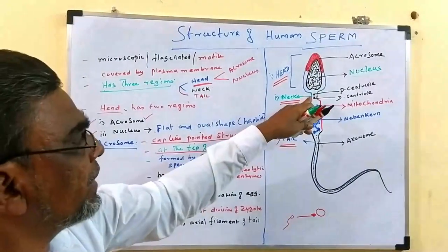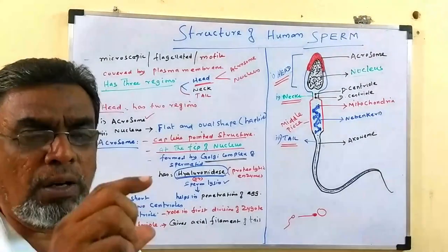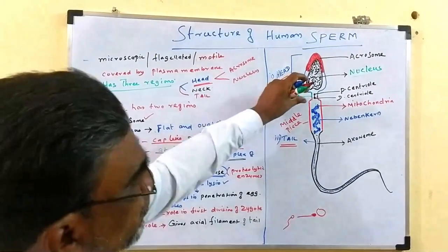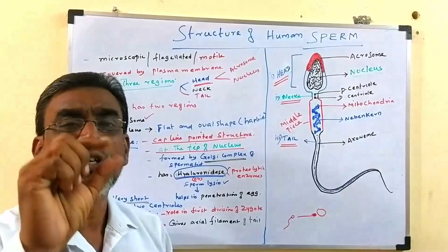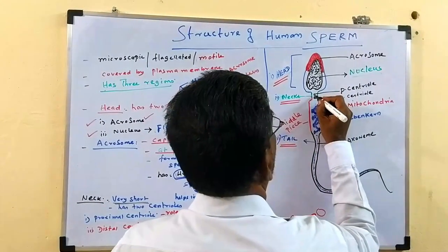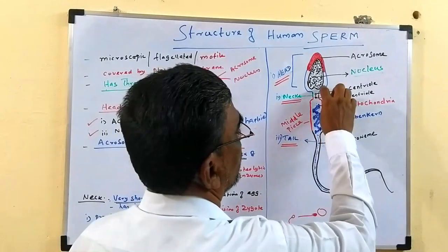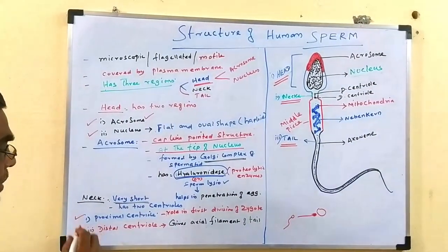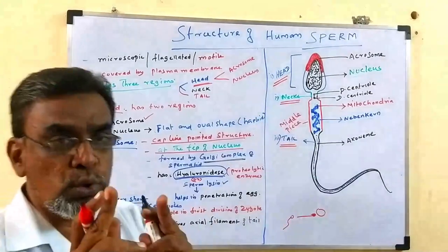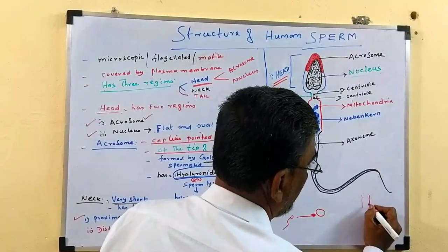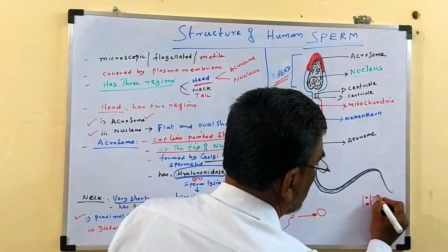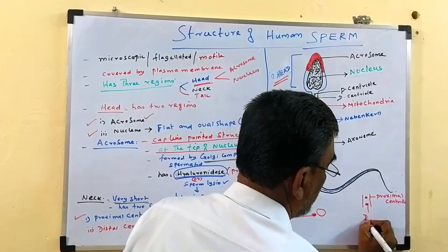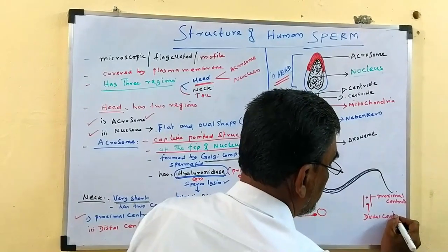The head portion is over. The second region is the neck region. The neck region is very short — not a long neck, very small and short. But this neck region has two centrioles. One centriole is very close to the head region nucleus and is called the proximal centriole. The other one is the distal centriole.